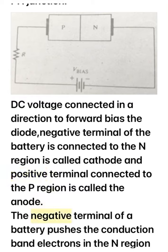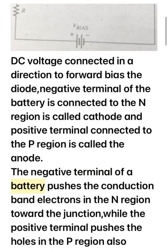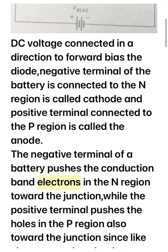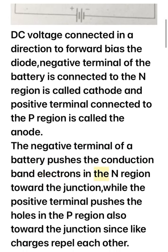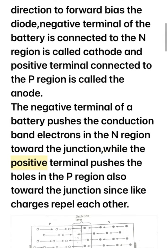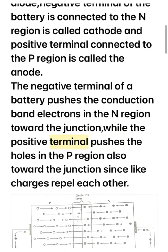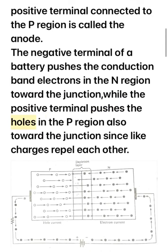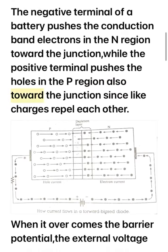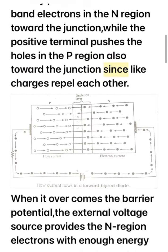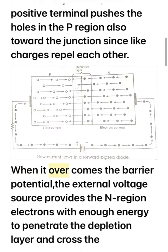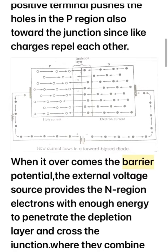The negative terminal of the battery pushes conduction band electrons in the N region toward the junction, while the positive terminal pushes the holes in the P region also toward the junction. Since like charges repel each other, when it overcomes the barrier potential,